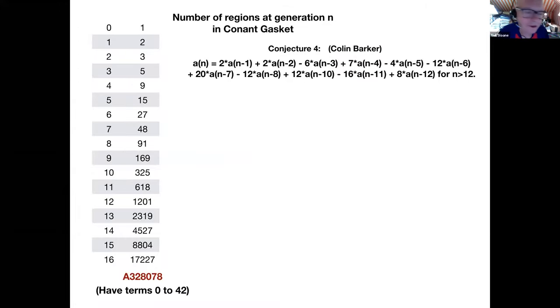The question is how many regions are there? When we got to 33 terms, GFUN, the wonderful program that Bruno Salvy and Paul Zimmerman, their Maple program for guessing generating functions, was able to guess a generating function and a recurrence. The recurrence seems to be a linear recurrence of degree 12. Each term depends on the previous 12 terms. That was true after 33 terms. We've now computed, last night, Remy Segrist computed a couple more terms. So now we have term 0 to 42. It's sequence A328078 if you want to see them all. And this recurrence still holds. There's nothing particularly mysterious about this recurrence. It doesn't have any zeros near the unit circle or anything suspicious. It seems to be right, but we can't prove it.